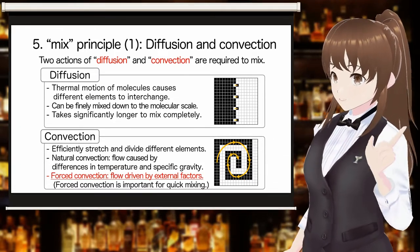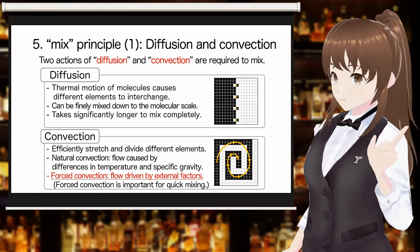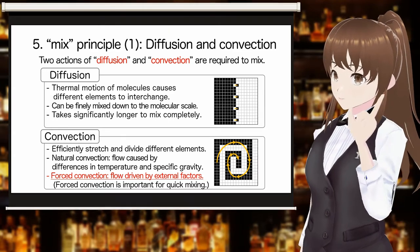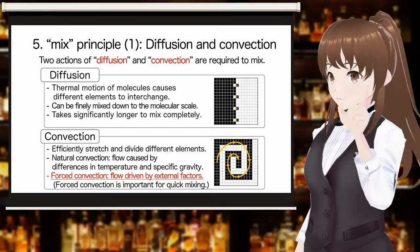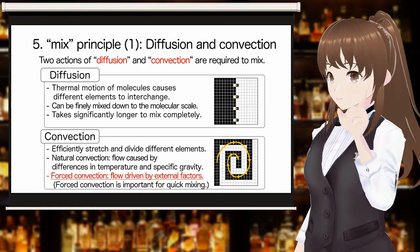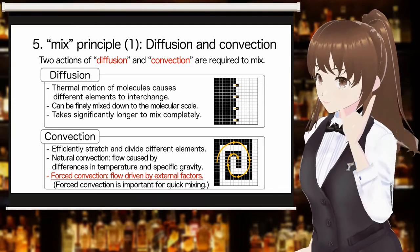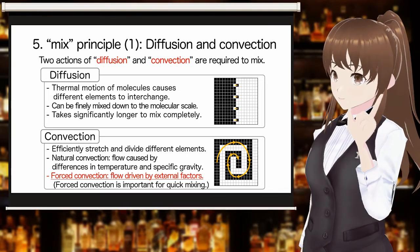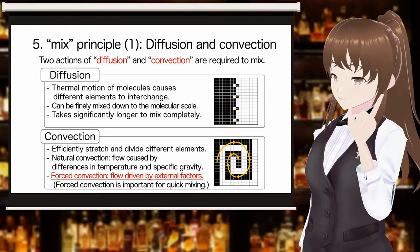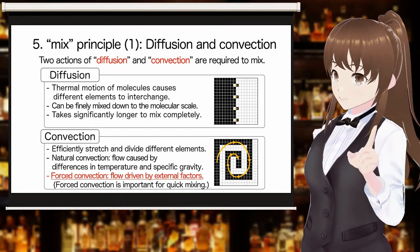Diffusion and convection are necessary for mixing. Diffusion mixes by interchanging different substances at the molecular level, but it takes a significant amount of time for them to mix completely. Convection quickly increases the interface between different things by stretching the separated state with flow. Convection includes natural convection generated by temperature difference and specific gravity difference, and forced convection generated by external force. To achieve the goal of mix in shaking, it is important to generate forced convection by an external force such as shaking the shaker.